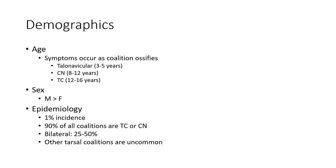Demographic age at symptomatic occurrence: talocalcaneal coalition at 0–5 years, calcaneonavicular (CN) coalition at 8–12 years, and talocalcaneal (TC) coalition at 12–16 years, with predominant male involvement. Epidemiology: 1% prevalence in general population. 90% of all coalitions are TC or CN, and 25–50% are bilateral.